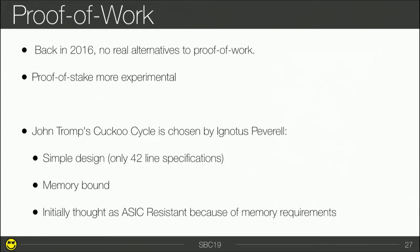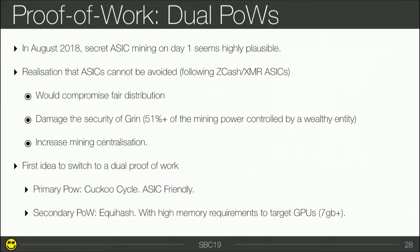But a year and a half later, we figured out that in August 2018 secret ASIC mining was a real concern — there were the Zcash ASICs and the Monero ASICs. We figured out that the possibility of someone mining on day one with secret ASICs on Cuckoo Cycle was really, really high, and we didn't want that. We didn't want to compromise the fair distribution of the coin, especially at the beginning of a new cryptocurrency, and we didn't want to damage the security of Grin due to mining centralization.